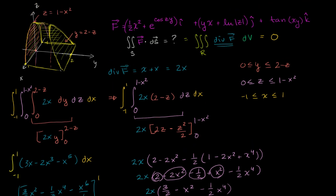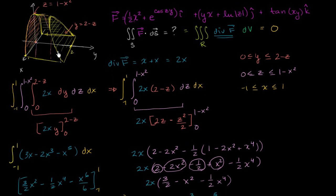In the last video, we used the divergence theorem to show that the flux across this surface, which is equal to the divergence of f summed up throughout the entire region, is equal to 0.